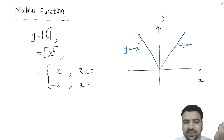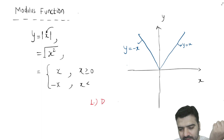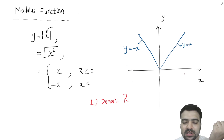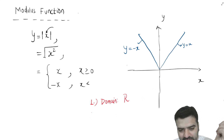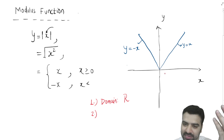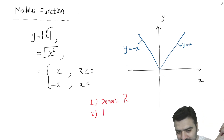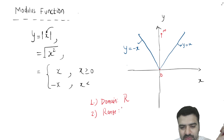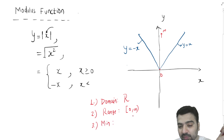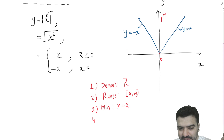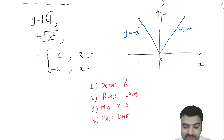Now we can discuss the properties. The domain of this function — it has no restrictions, so domain is all real numbers. The range: the graph lies entirely above the x-axis, so it cannot take negative values. Therefore, range is [0, ∞). The minimum value is 0, and the maximum value is infinity — meaning it does not exist.